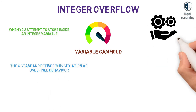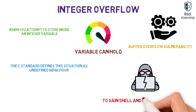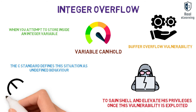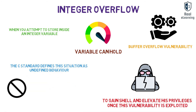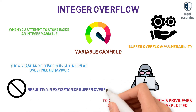Integer overflow leads to the execution of a buffer overflow vulnerability, which allows the attacker to gain shell and elevate his privileges once this vulnerability is exploited. The validation checks are actually disabled by the integer overflow vulnerability, thus resulting in execution of buffer overflow.